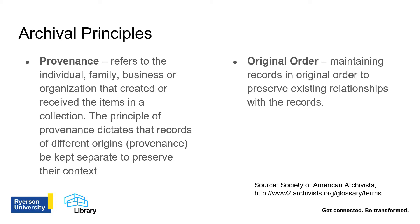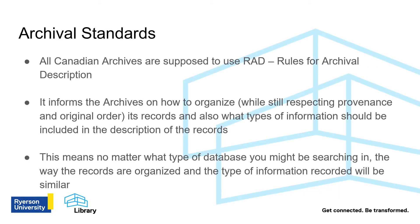For example, records from a photographer's studio might be best organized by date, by subject, or by job number. Canadian archives traditionally use RAD — the Rules for Archival Description. RAD informs the archives on how to organize, while still respecting provenance and original order, its records, and what types of information should be included in the description. This means no matter what type of database you might be searching in, the way the records are organized and the type of information recorded will be similar.